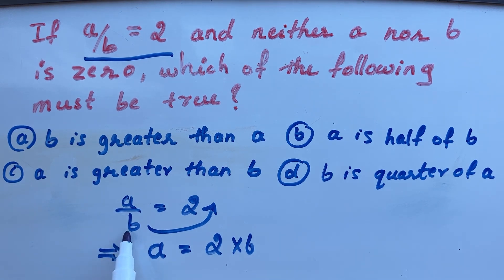Here it is in the denominator. When you cross multiply, it goes to numerator and this division will become multiplication. So A is equal to 2 times B.